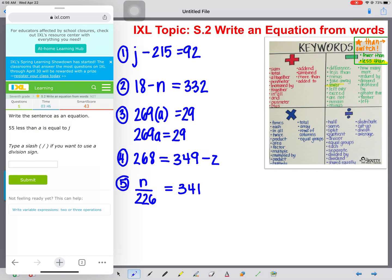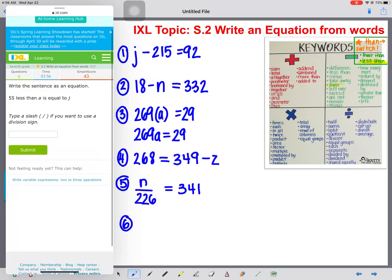Good job! Okay, number six. 55 less than A is equal to J. Okay, again, right away we see less than. That is a switch word. So we're going to do A minus 55 equal to J.